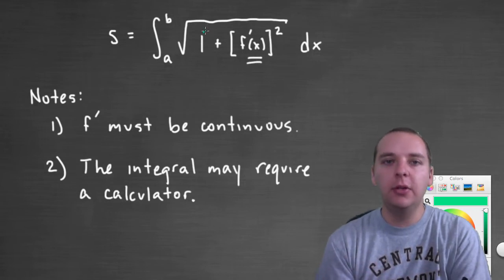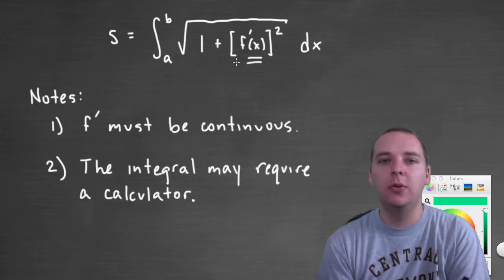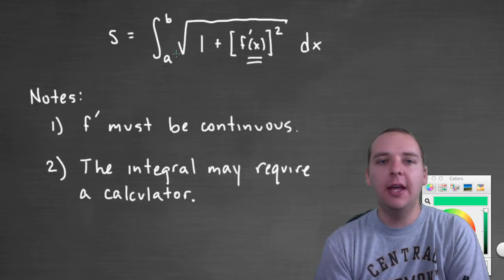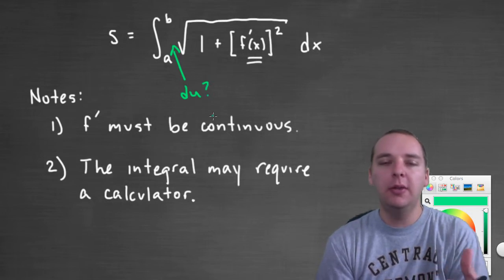If you, like we typically do, let the inside of the radical be the u, notice there's never going to be anything else out here to be your du. You'll never have anything else. So my point of that is, u substitution often doesn't work.